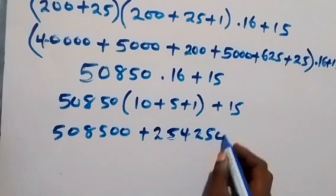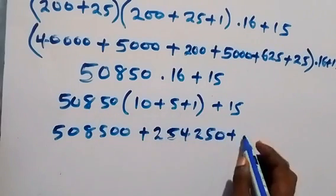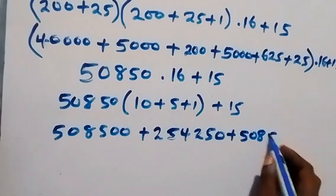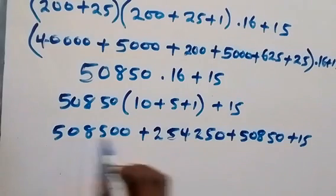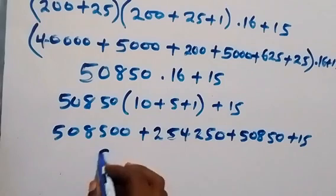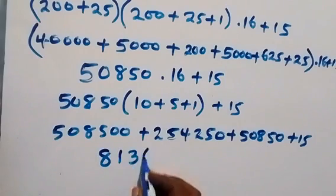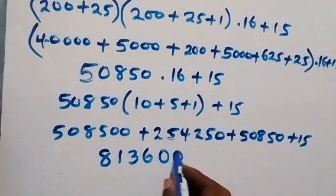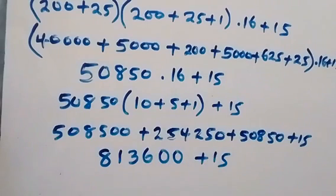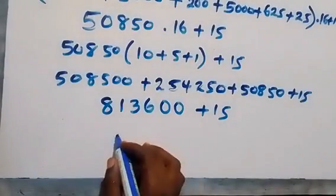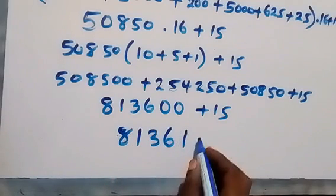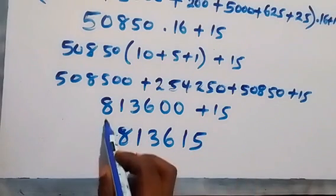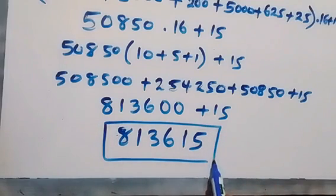Then plus 15. When we sum this together we have 508,500 plus 254,250 plus 50,850 equals 813,600, then plus 15, which gives us 813,615. So from here we have 813,615 as the final answer to this given problem.